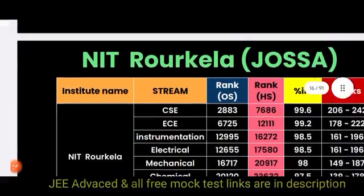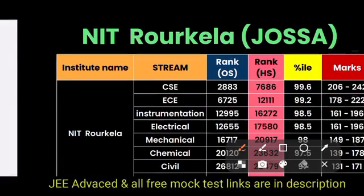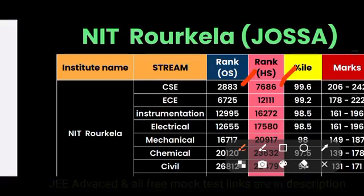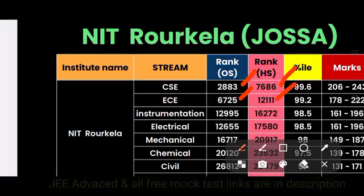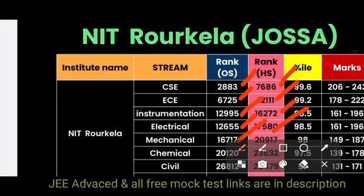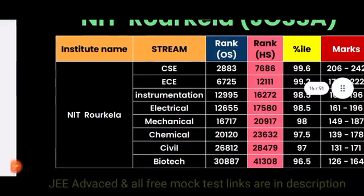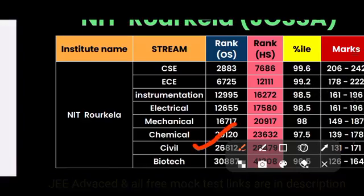For NIT Roorkee through JOSA, Computer Science is 2,883 for other state and 7,686 for home state. ECE is 6,725 for other state and 12,000 for home state. Instrumentation is around 12,995 for other state and 16,000 for home state. Electrical is 12,655 for other state and 17,580 for home state. Mechanical is 16,717 for other state and 20,917 for home state. Chemical is 20,120 for other state and 23,632 for home state. Civil is 26,000 for other state and 28,000 for home state.